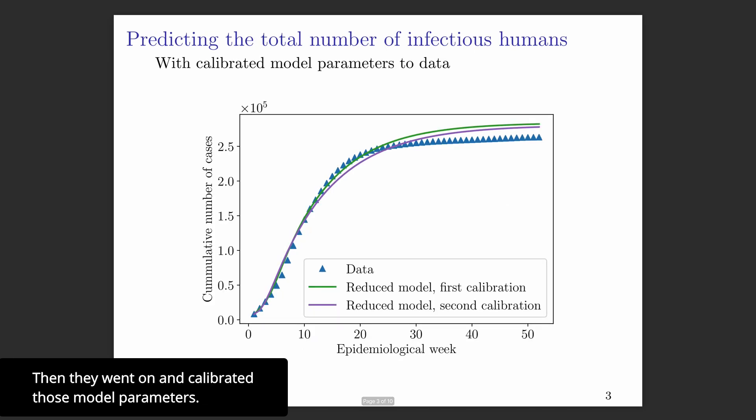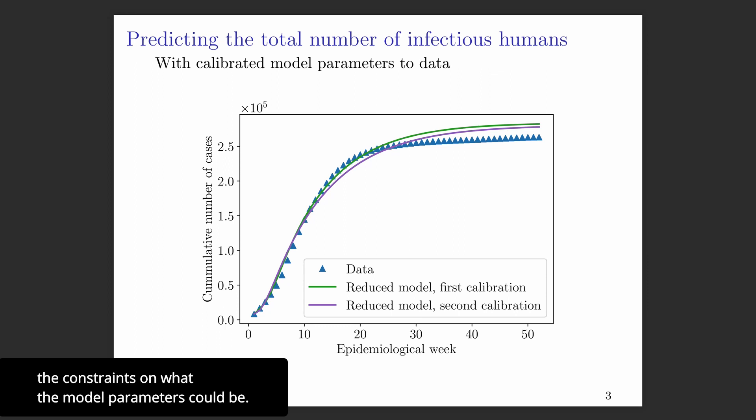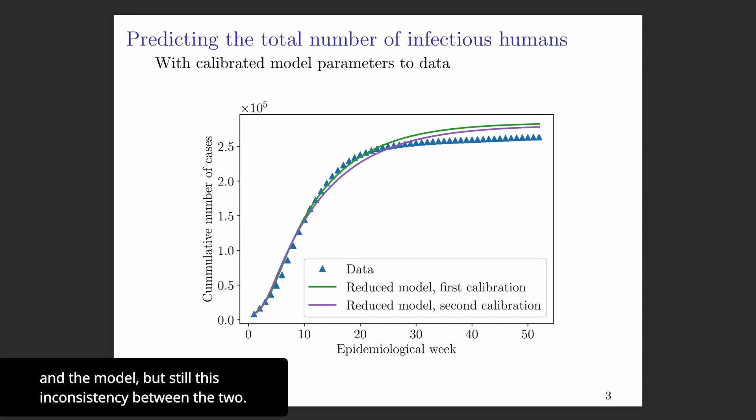So then they went on and calibrated those model parameters. There were two variations with slight differences in the constraints on what the model parameters could be. Here there's much better agreement between the data and the model, but still some inconsistency between the two.